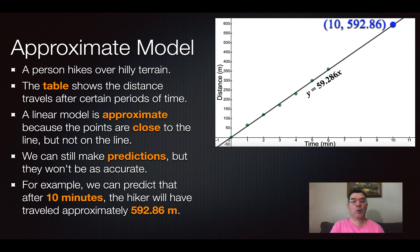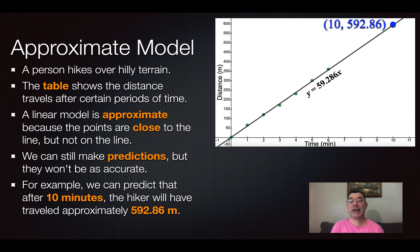So for example, if I wanted to know how far the hiker would travel in 10 minutes, I could take that value of 10, plug it into that equation of y equals 59.286x and get a distance of 592.86 meters. So that's approximately how far the hiker will have traveled in 10 minutes.